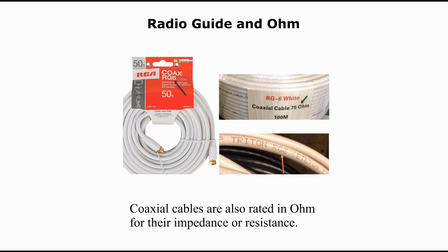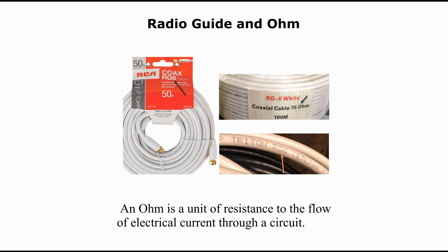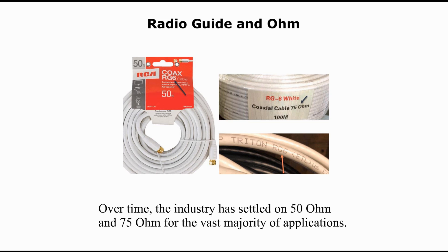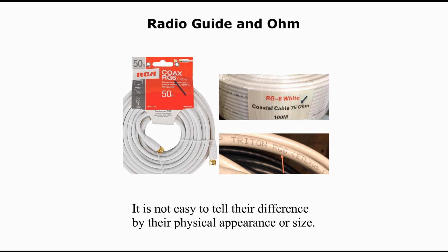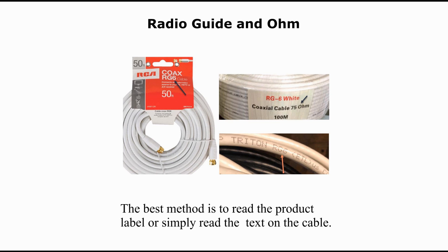Coaxial cables are also rated in ohms for their impedance, or resistance. An ohm is a unit of resistance to the flow of electrical current through a circuit. Over time, the industry has settled on 50 ohm and 75 ohm for the vast majority of applications. Coax cables look similar to each other and it is not easy to tell their difference by physical appearance or size. The best method is to read the product label or simply the text printed on the cable.